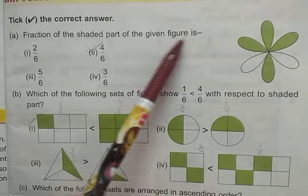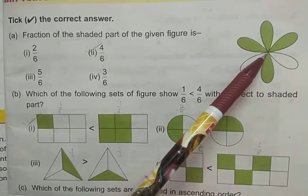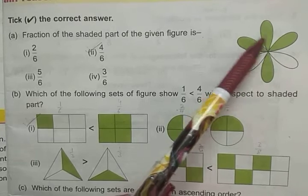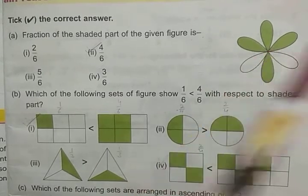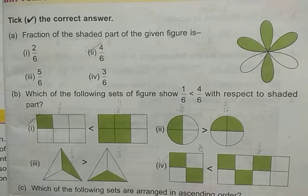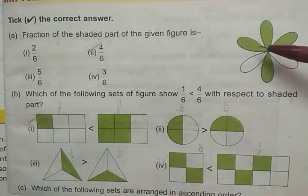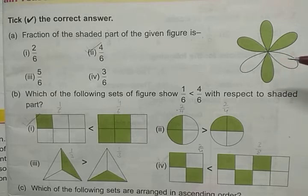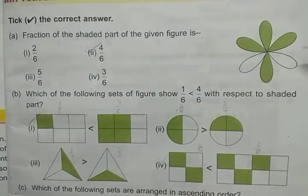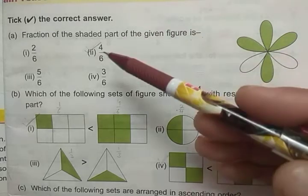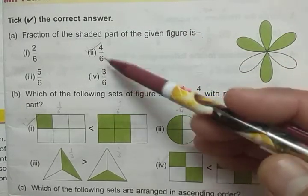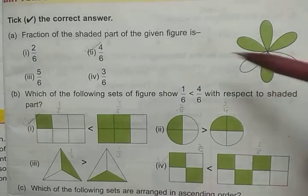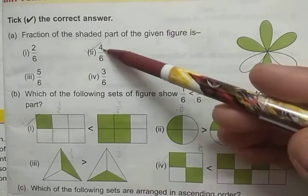The fraction of the shaded part of the given figure is — count the total number of parts and the number of shaded parts. Total number of parts are 1, 2, 3, 4, 5, 6. And the number of shaded parts are 1, 2, 3, 4. So 4 out of 6 parts are shaded. We write the number of shaded parts in the numerator and total number of parts in the denominator, giving 4 upon 6.